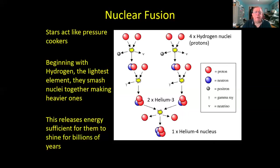This fusion process is going on inside the core—the pressure cooker of the sun. It's only right in that core, because it needs very high temperatures and very high pressures to cram those positively charged protons together. Being both positively charged, they repel each other with the electrostatic force, so you have to smash them together quite hard to overcome that repulsion.